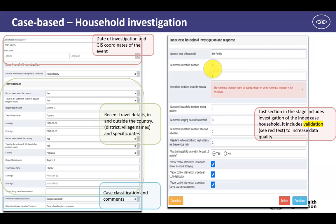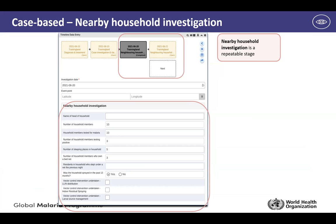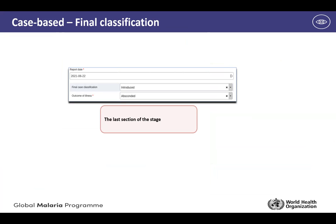We also provide guidance on the bare minimum that countries need to collect: date of investigation, GPS coordinates of the event, recent travel histories in and outside of the country, district and village level details, case classification, and any other relevant comments. The last section includes investigation of the index case at household level, and we've applied some validation to increase data quality for critical information in case-based surveillance. There is also a section on nearby household investigation, which is a repeatable stage, and once all activities are complete you have a final case classification.